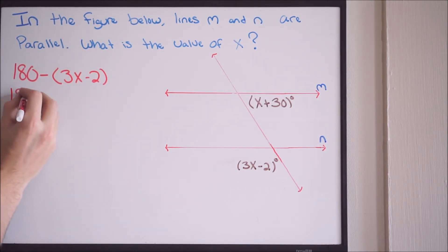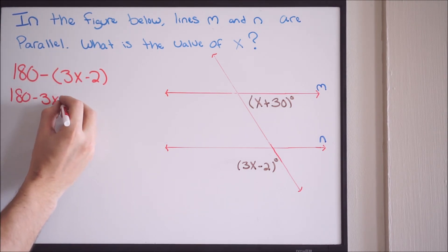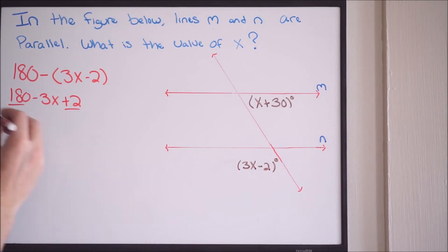So we're going to get 180 minus 3x. We're just distributing this negative sign. And then plus 2. Let's go ahead and just combine our like terms here. So we have 180 and 2, so that's going to give us 182 minus 3x. So now we have what this angle is here. It's 182 minus 3x, and this would be in degrees.